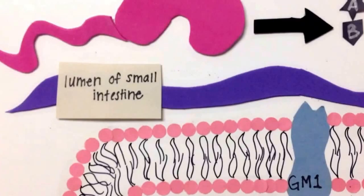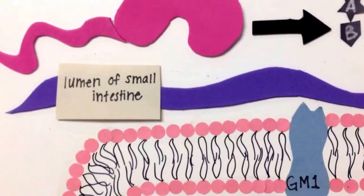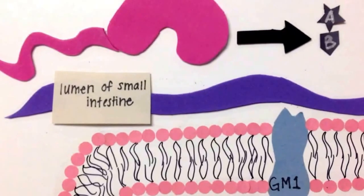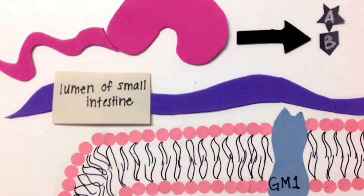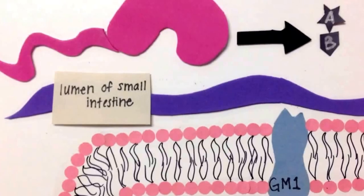Because the Vibrio cholera bacteria cell cannot enter the lumen of the small intestine itself, it produces the AB binary exotoxin to bind to the ganglioside GM1 host receptor on enterocytes of the lumen of the small intestine.